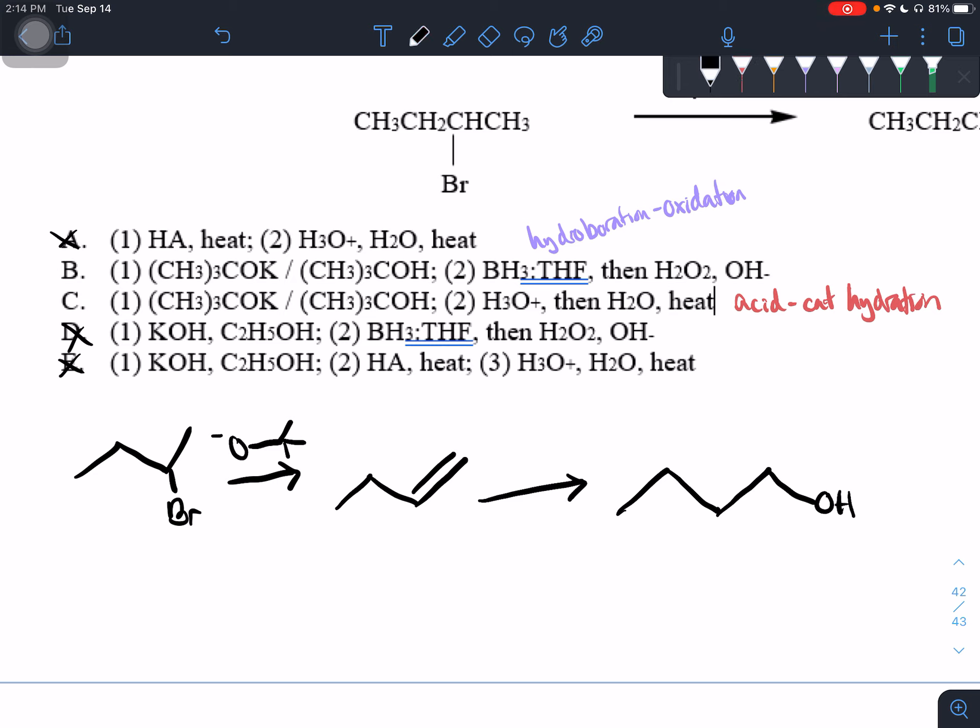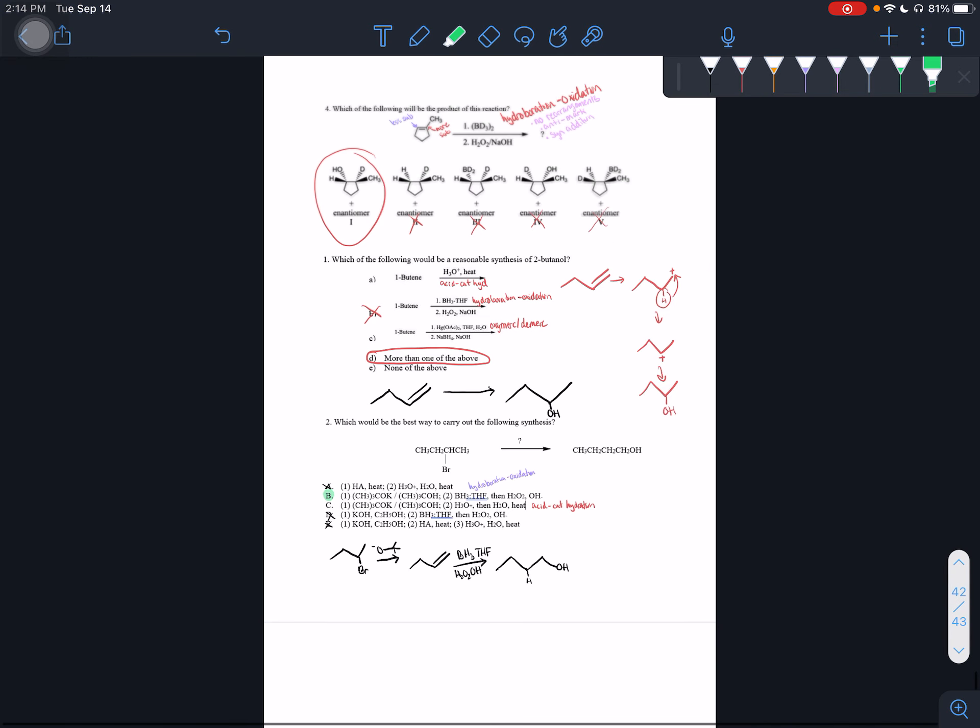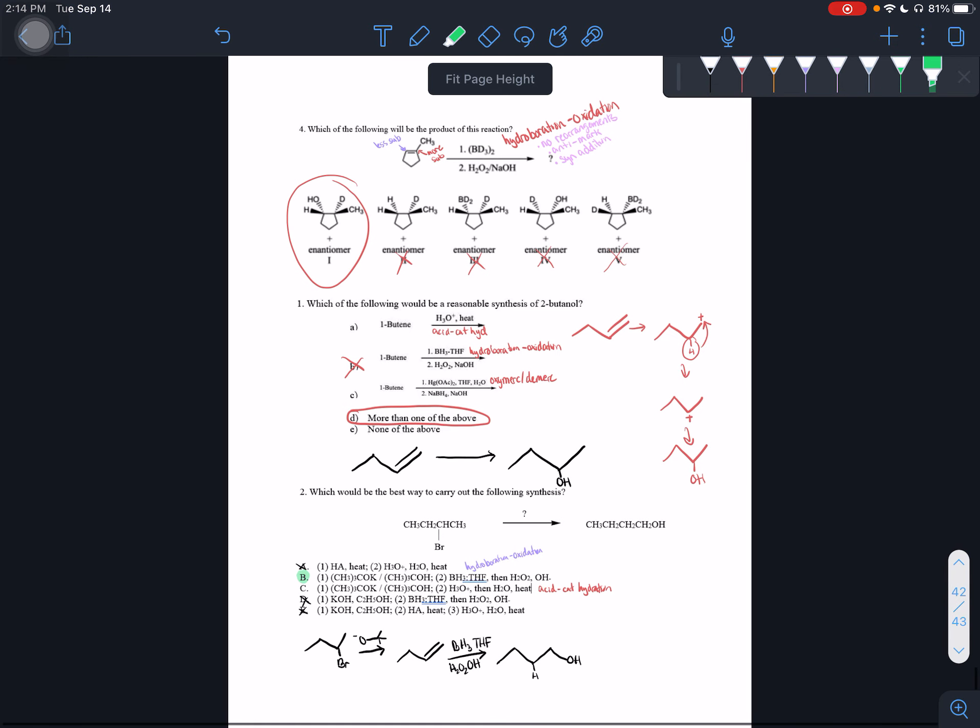I'll draw in our BH3THF followed by H2O2 and OH. So we added on the alcohol there and then we added the hydrogen over here. So the correct answer for this one is B. Okay. Let me zoom out. And there you guys go. There's some practice problems.